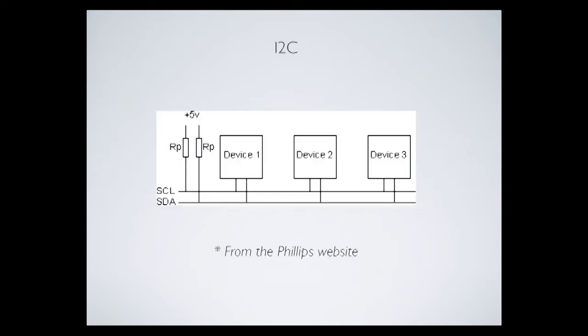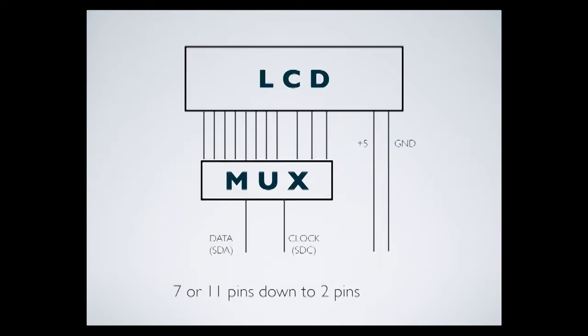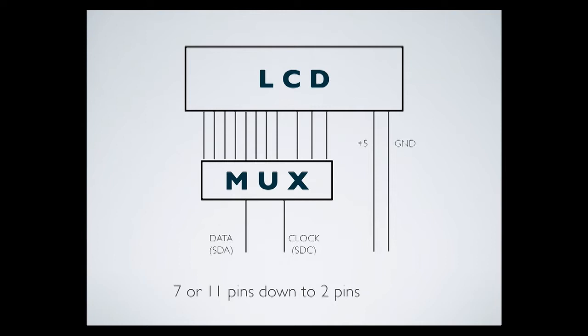In the MUX, you send data to say turn pin one on, turn pin two off, pin three off, pin four on, then turn on the enable pin — so you basically send a command for each line. Then you send a command for the RW, which lets the LCD read the data. It's more data going back and forth, but on a text display it's so fast you can never tell the difference.